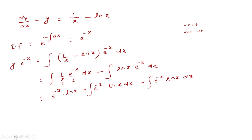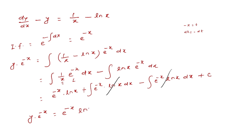After integration by parts, the terms cancel nicely, giving plus c. So y·e^(-x) = e^(-x)·ln x + c, and therefore y = ln x + c·e^x.